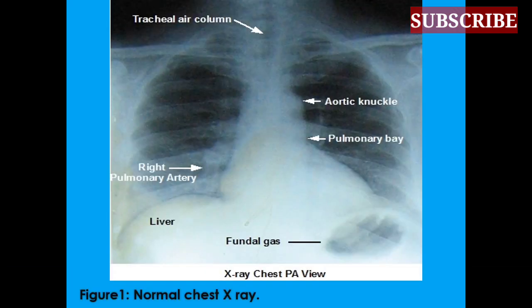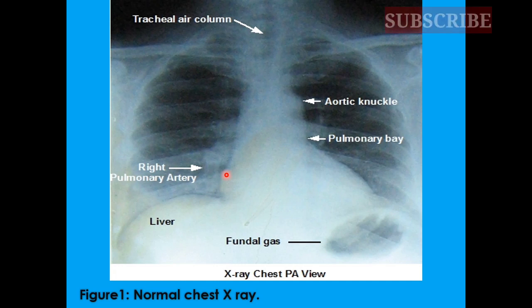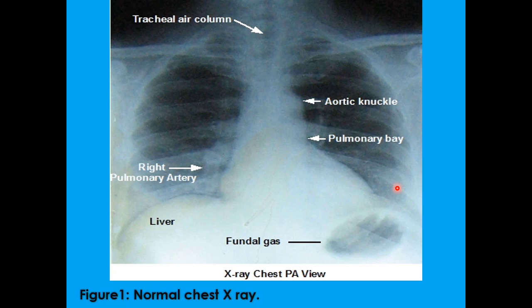We begin our lecture by examining a normal chest X-ray. In a normal chest X-ray, the heart size is normal. This is the cardiac shadow and it is normal. By normal, we mean that the cardiothoracic ratio — which is the cardiac width divided by the thoracic width — is less than 50%. We also see that the upper zone vessels are normal, meaning they are smaller than the lower zone vessels. And in the lower zone, we can appreciate some streaks which represent the vessels.